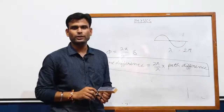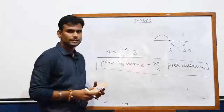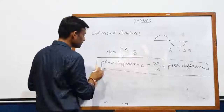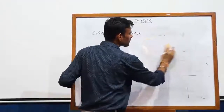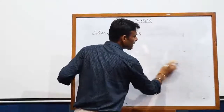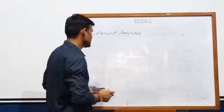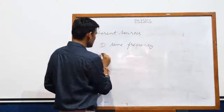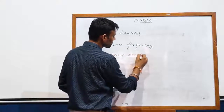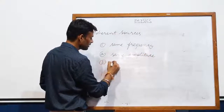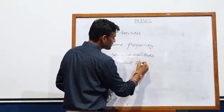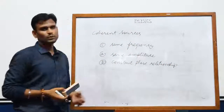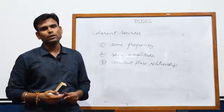Now we come to the point of coherent sources. Coherent sources are those sources which have approximately the same wavelength, the same amplitude, and most importantly, they maintain a constant phase relationship. So three conditions must be met: same frequency, almost same amplitude, and a constant phase relationship. Without these coherent sources, the phenomenon of interference is not possible.